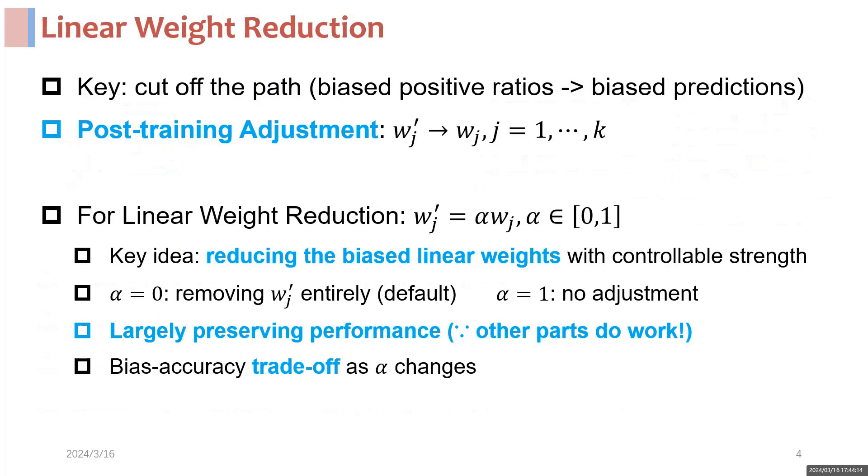Specifically, we can reduce the biased linear weights, which applies very limited changes to the well-trained CTR model and largely preserves the preference estimation, since other model parameters also provide sufficient information.